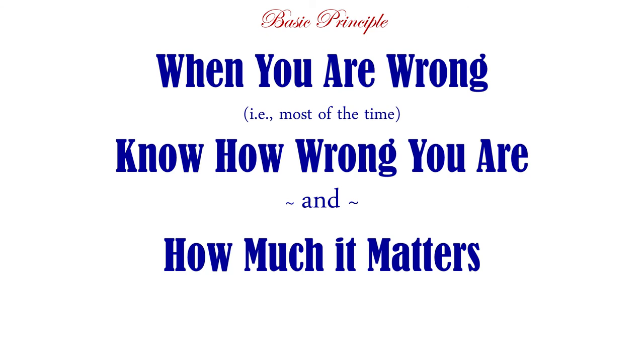And we try to make an informed cost-benefit decision, which leads to another principle, two-in-one lecture. When you're wrong, know how wrong you are and know how much it matters. That will help you make good decisions. So just knowing you're wrong, that doesn't make decisions for you. You need to know how wrong you are as much as you can. And you need to know how much it matters if you're a certain amount wrong, a little wrong, or a lot wrong. And if possible, if you're wrong this way or in this other direction.